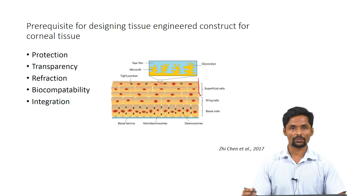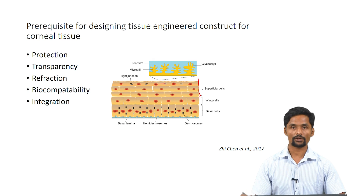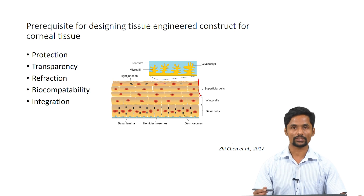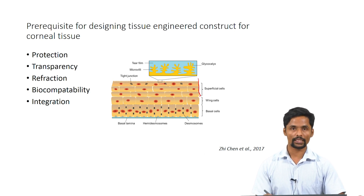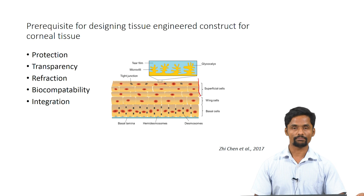The second prerequisite is transparency. As we know, the cornea is transparent in nature. The transparency of the cornea is maintained by the hydration level of the stromal layer. The excess water in the stromal layer is removed from the bottom endothelium layer by a metabolic pump, thereby maintaining the transparency of the cornea. Hence, the tissue engineering construct must also have the required transparency.